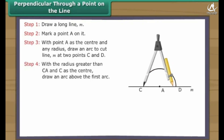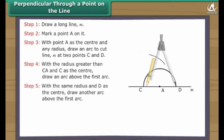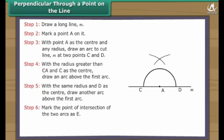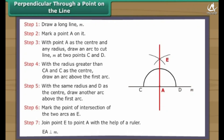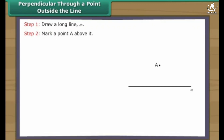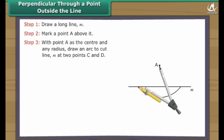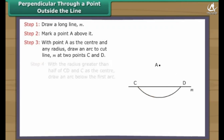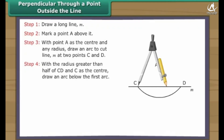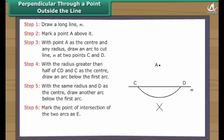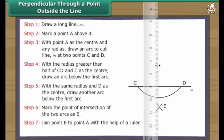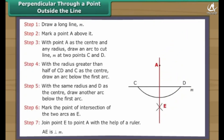With a radius greater than CA and C as the center, draw an arc above the first arc. With the same radius and D as the center, draw another arc above the first arc. Mark the point of intersection of the two arcs as E. With the same radius and C as the center, draw an arc below the first arc. With the same radius and D as the center, draw another arc below the first arc. Mark the point of intersection of the two arcs as F. Join point E to point A with the help of a ruler. EA is perpendicular to line M.